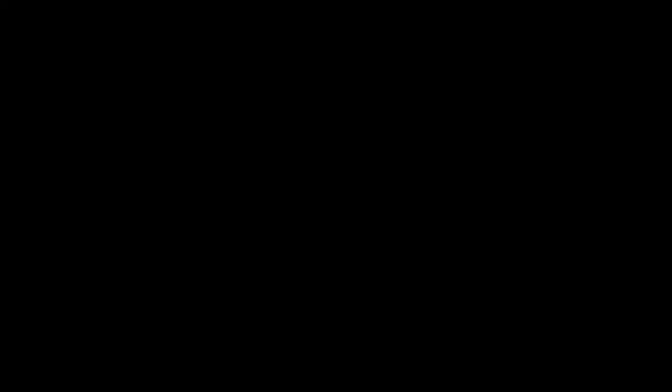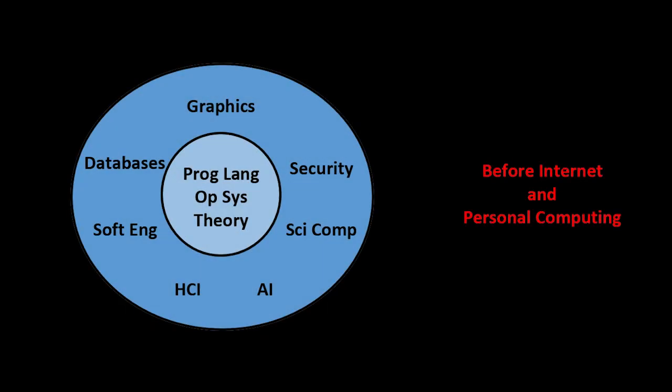The next stage in the evolution of computing was the start of a lot of the subfields of computer science that we study and hear about to this day — things like databases, graphics, software engineering, and security. These are all areas that these days have a lot to do with ethics and computing and data science. But in the era that these were being started, maybe the 1970s, there still weren't computers in the hands of people, there wasn't an Internet, and so you really still weren't thinking about ethical issues that much.